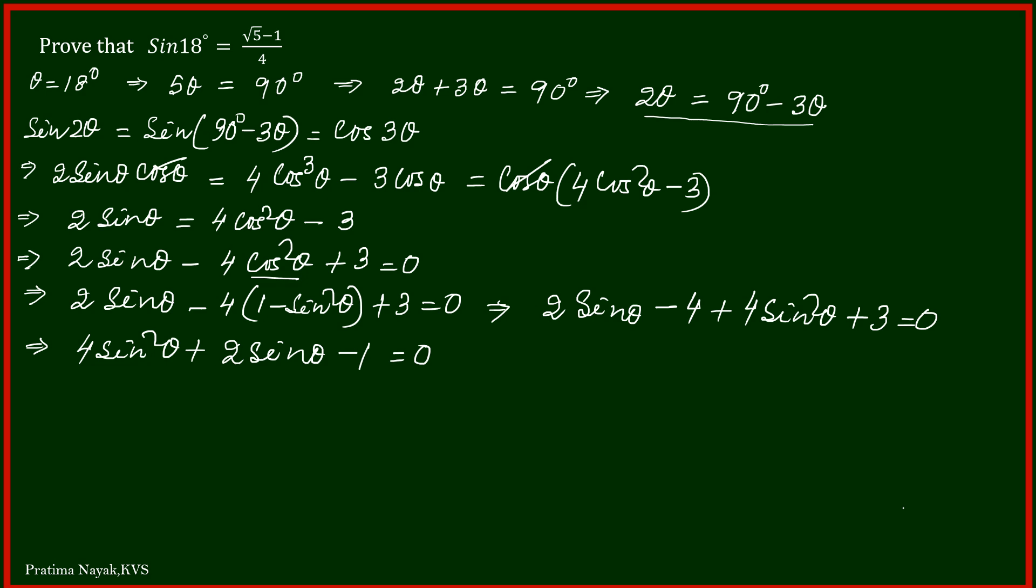So let us apply the quadratic formula to find the value of sine theta. Sine theta equals minus b plus minus square root of b squared minus 4ac, all over 2a.